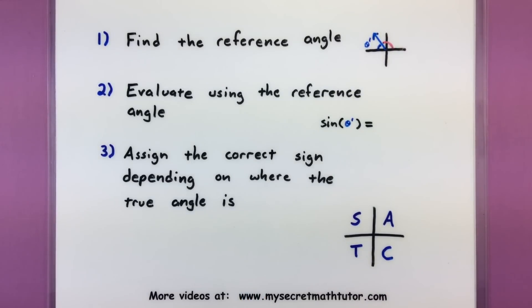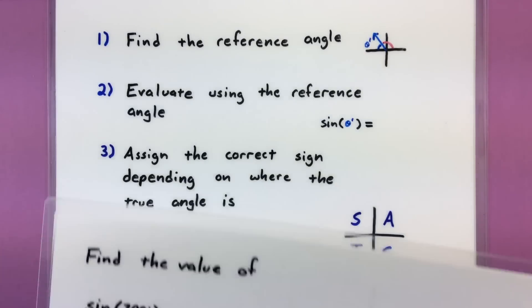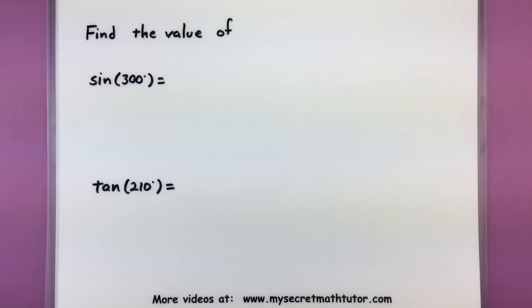In the last step you can figure out what sign it needs to have by remembering that all students take calculus. This is a neat way to remember that in the first quadrant all functions are positive. In the second quadrant the sine and its reciprocal are positive. Quadrant number three, tangent and its reciprocal are positive. And in quadrant number four, cosine and its reciprocal are positive. So if you know what function you're dealing with and you know where that true angle falls, you'll be able to determine whether it should be positive or negative and attach the proper sign.